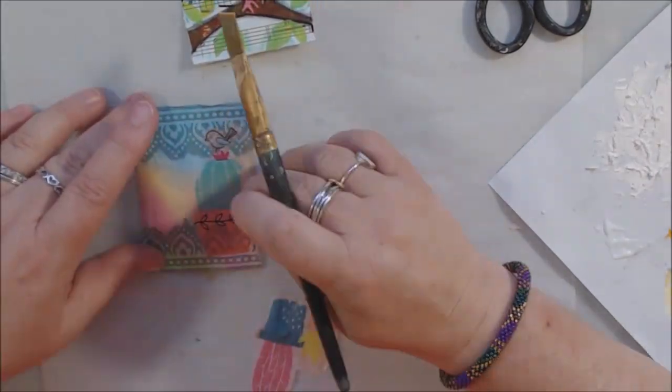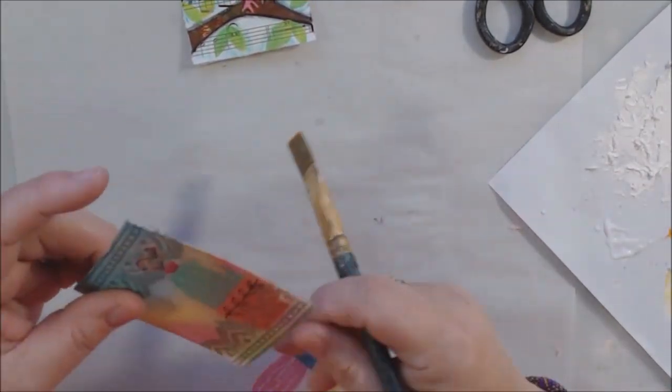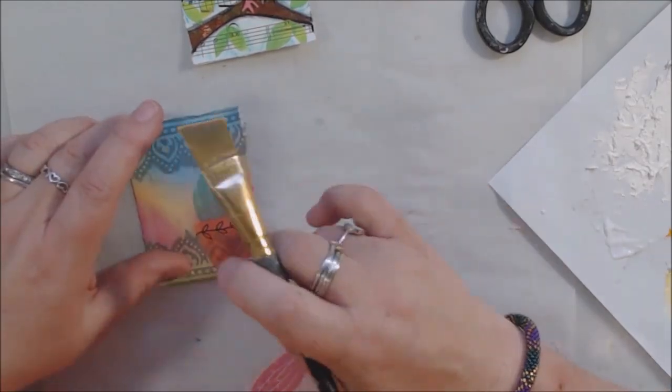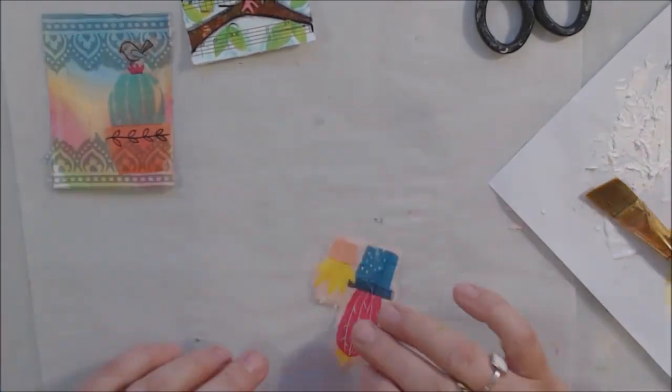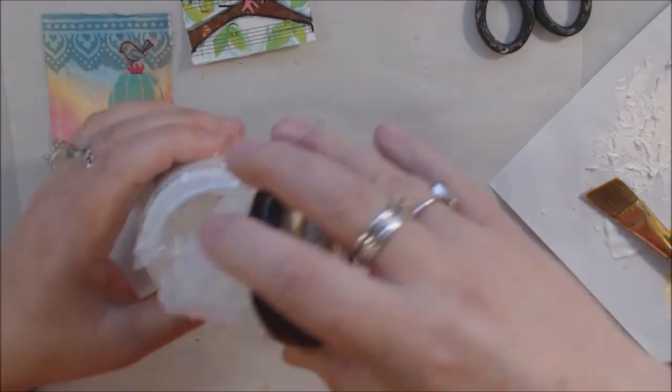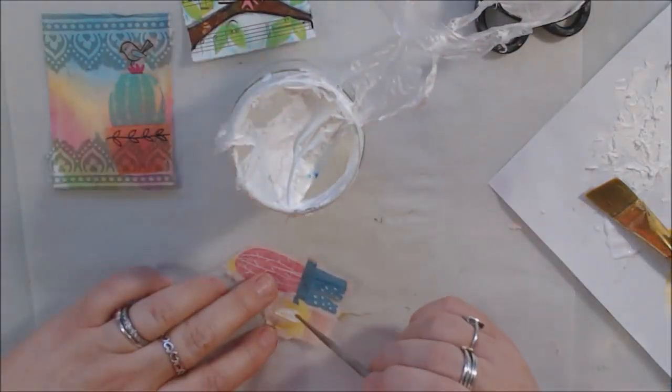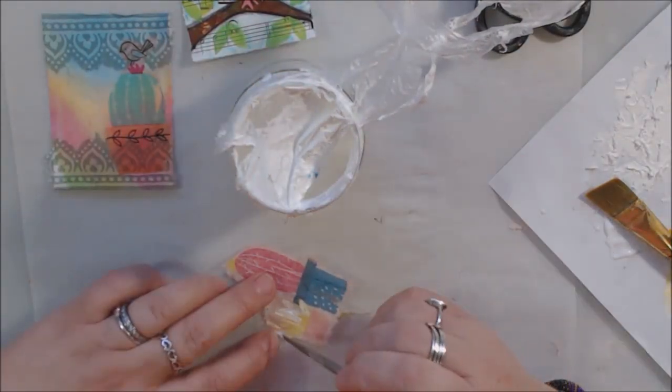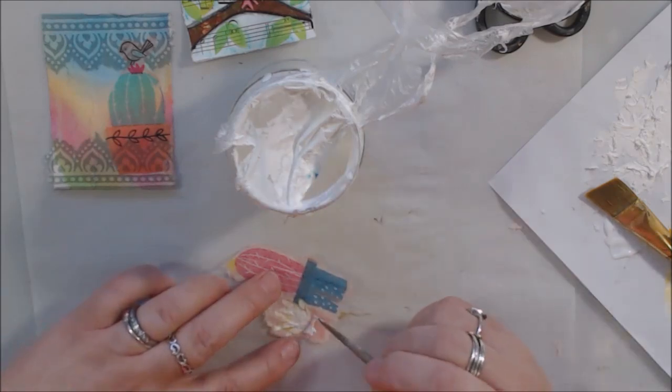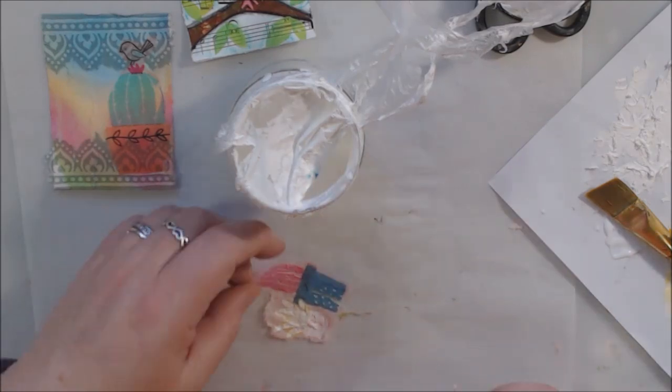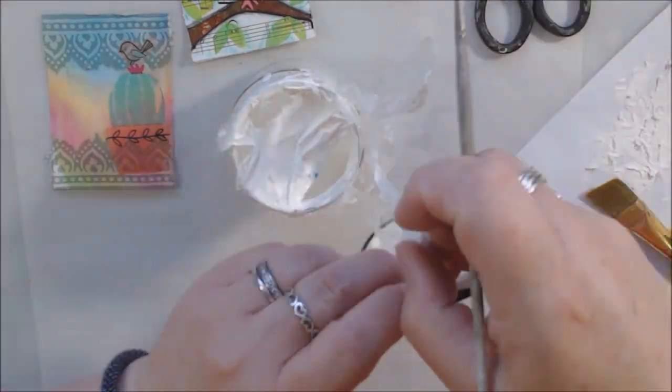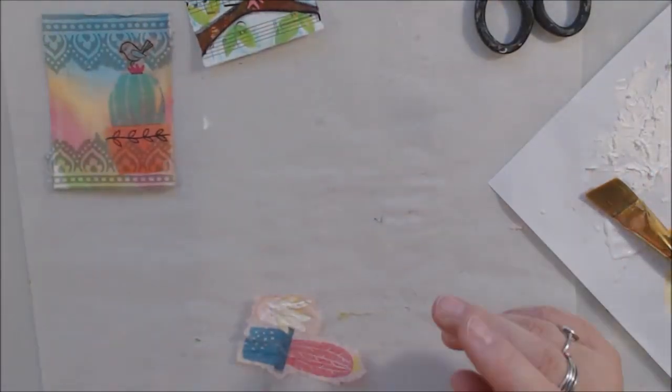Then I tore out some decorative edges from another napkin and put it on the top and bottom of the card. I'm using matte fluid medium and a very soft brush.